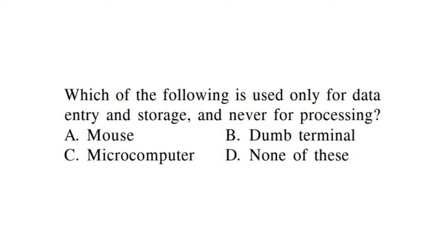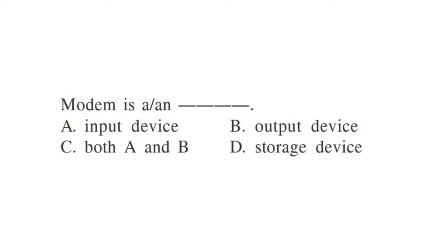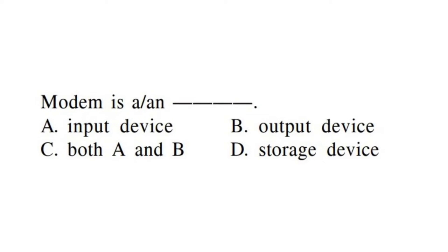Which device can be used for data entry and storage but cannot process? That is a dump terminal. Mouse — which device can be marked as both input and output? The correct answer is both A and B — it functions as input and also output.